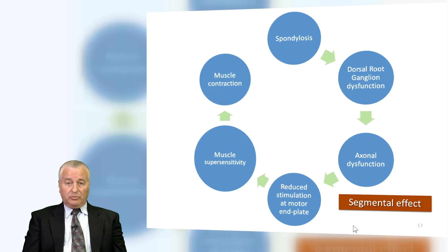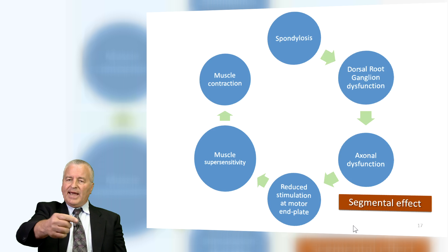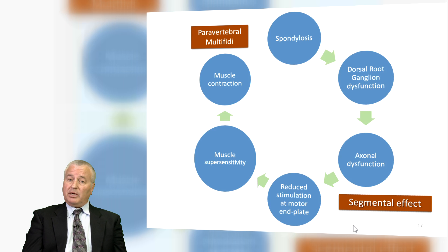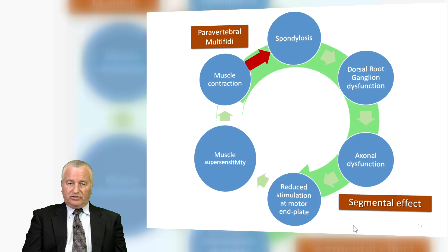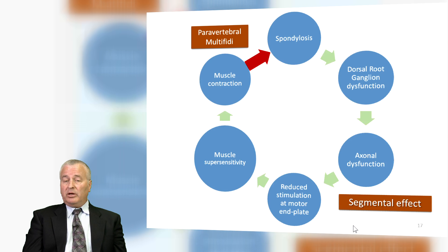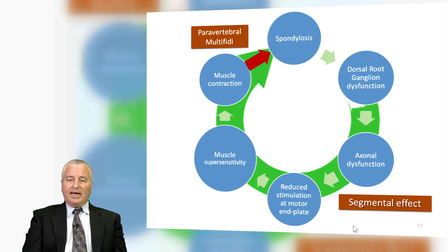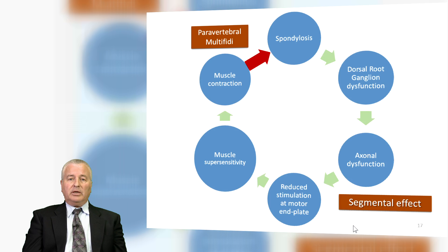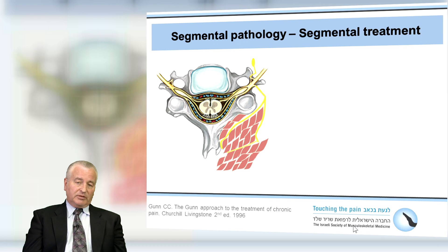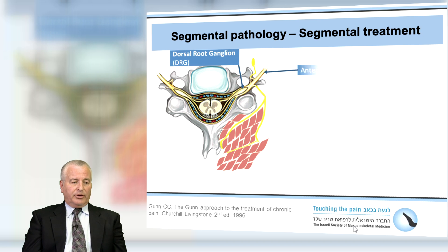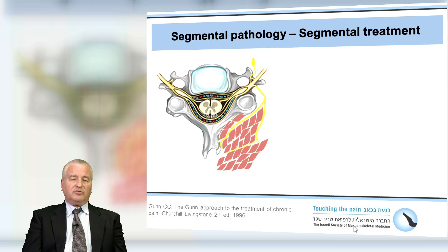The supersensitive muscle will be tighter and cause a contraction. If we think not only about the muscles involved with that anterior primary ramus to the periphery, but also the paravertebral multifidi going through the same problem — because the posterior ramus arises after the dorsal root ganglion — we're going to start having a problem of a vicious circle. In order to reverse the problems of myofascial pain in the periphery, we'll have to look at the paravertebral muscles and perhaps treat them as well. This is how Gunn's model of the cause of myofascial pain will cause a reason for segmental treatment, not only at the area of pain.